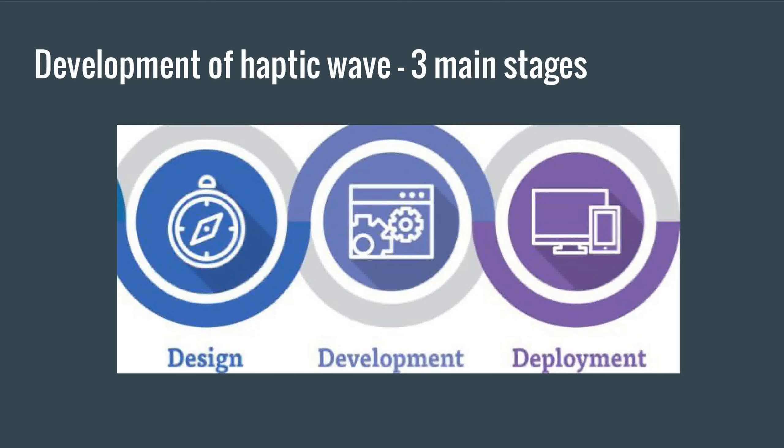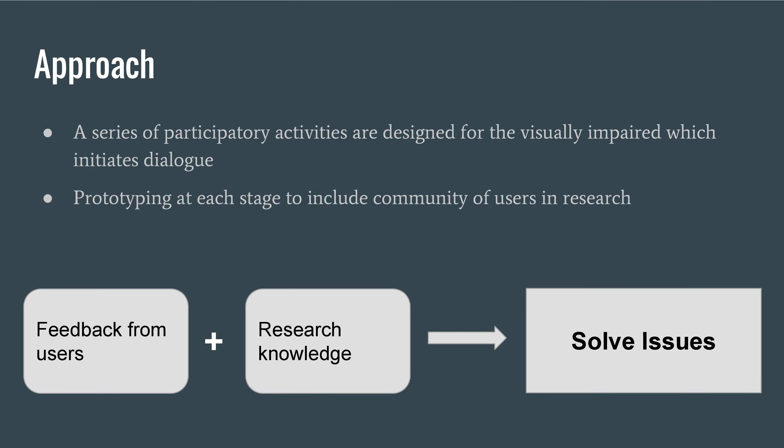The development of the haptic wave involved three main stages: design, development, and deployment. A series of participatory activities were designed for the visually impaired. Prototyping was done at each stage, since feedback from users integrated with research knowledge allowed authors to incrementally confront and solve issues.